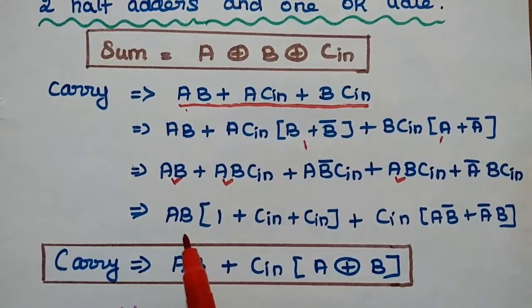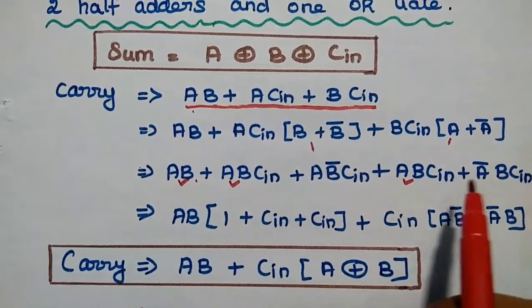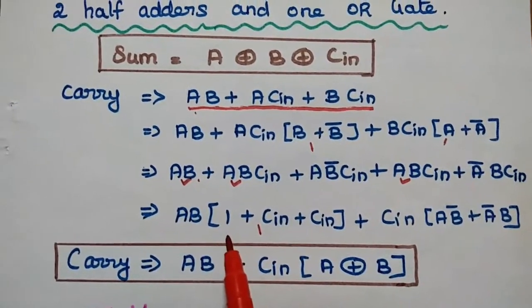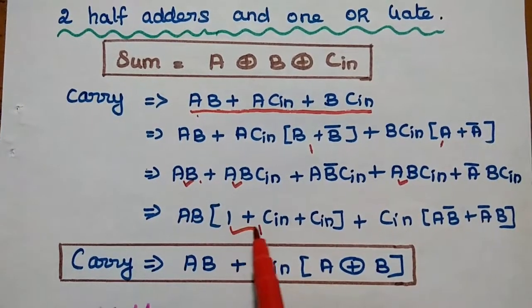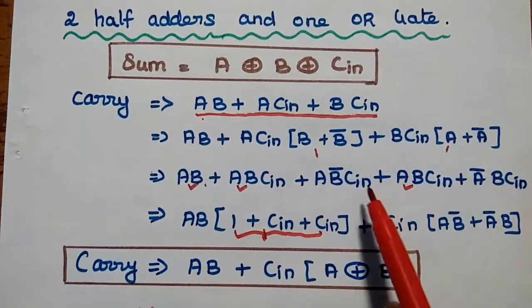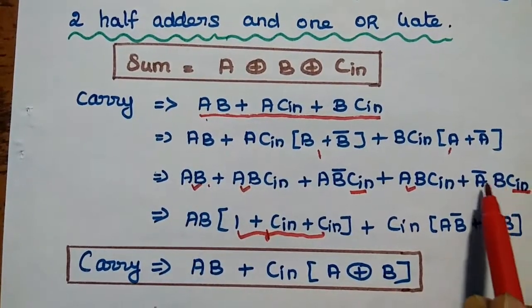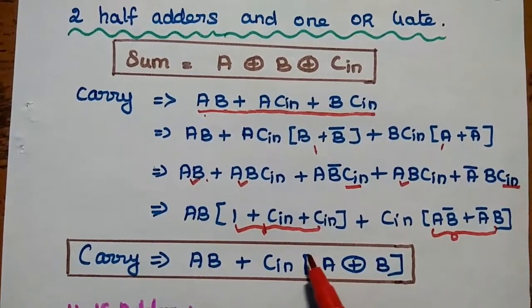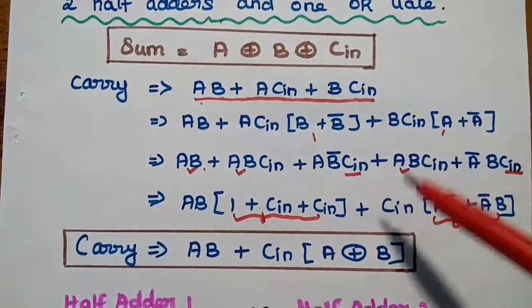We can see AB is present in multiple terms, so we take AB as common. We obtain AB(1 + Cin + Cin). Since 1 plus any bit is always 1 — that is the Boolean postulate — this term becomes AB. Then Cin is common in the remaining terms, giving us AB + Cin(AB̄ + ĀB). Since AB̄ + ĀB is the XOR operation of A and B, we write: Carry = AB + Cin(A XOR B). So we have simplified the carry expression in terms of XOR gate.